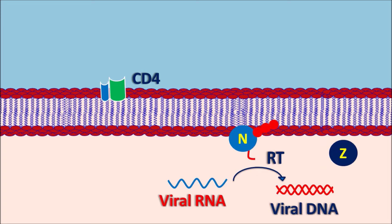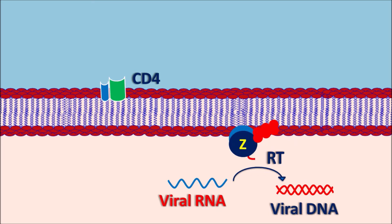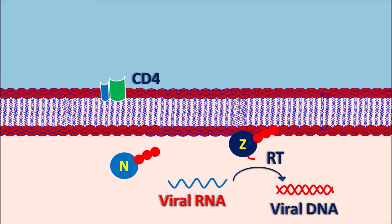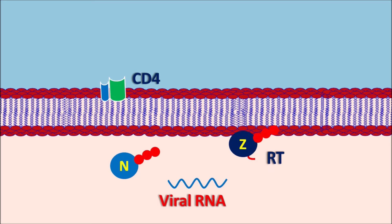Zidovudine is a nucleoside reverse transcriptase inhibitor which is converted into its triphosphate form. In this triphosphate form, the drug binds to the reverse transcriptase enzyme at the same site where normal nucleosides bind, thereby preventing the attachment of viral nucleosides to the enzyme. In this way, Zidovudine inhibits reverse transcriptase activity, preventing the conversion of viral RNA to viral DNA. Since it competes with nucleoside triphosphates, Zidovudine is a competitive enzyme inhibitor and an NRTI.